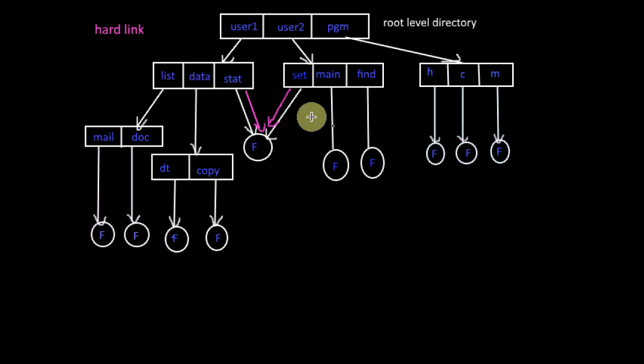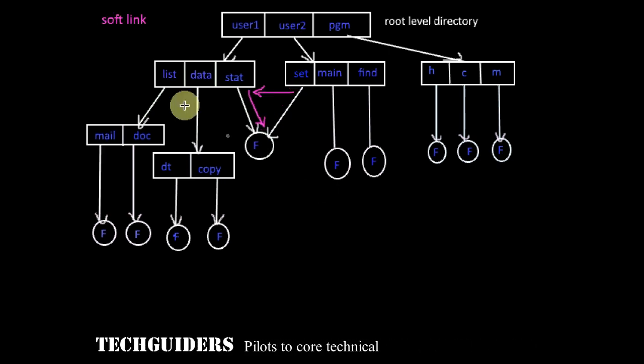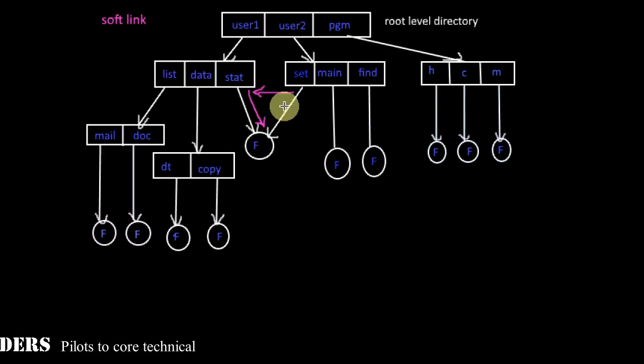Another major problem is with deletion. Since there are different links to the same file, when can the disk space allocated to the file be deallocated? In symbolic links, the deletion of the link never affects the original file, only the link is removed.